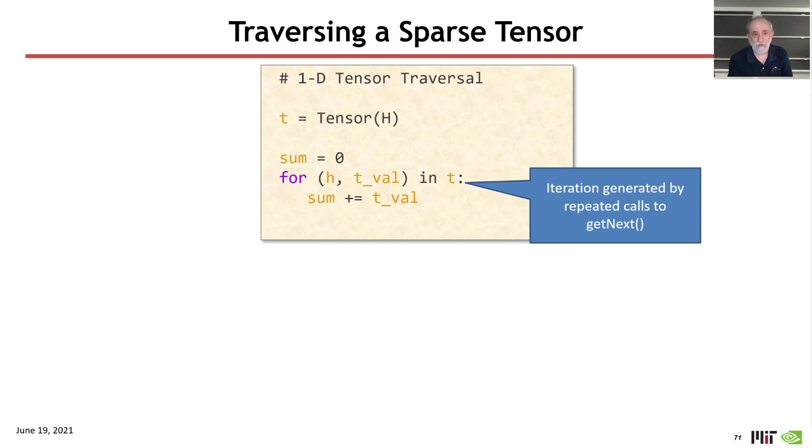So, I have an iterator that is generated by repeated calls to get next, and so get next is well defined for my fiber tree, and I know from my previous section that I can do a get next on any data representation.